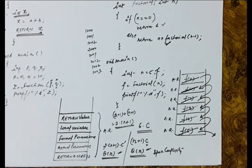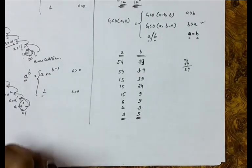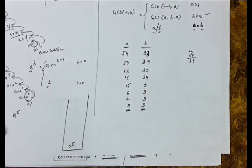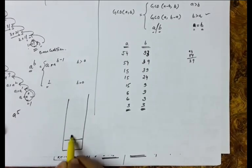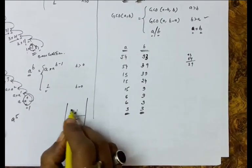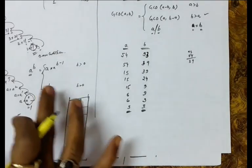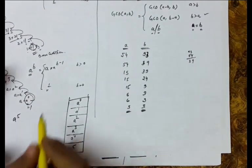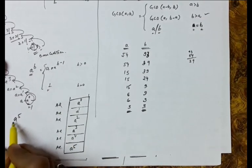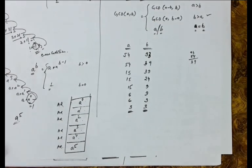Let us take another example. Suppose we have to find a raised to the power b — say a raised to the power 5. For finding a^5, first we store the activation record of a^5, then above this a^4, above this a^3, above this a^2, above this a^1, and finally the activation record of a^0 where the base condition is reached. So for finding a^5, 6 activation records are pending at any moment, and space complexity is due to this.